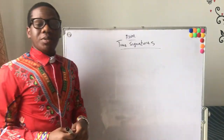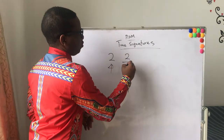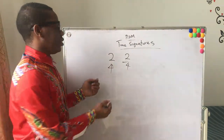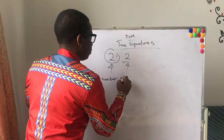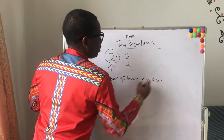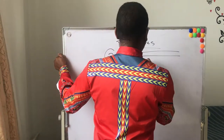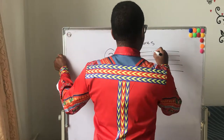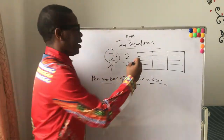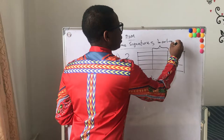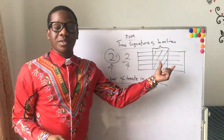The time signature looks like a fraction — something like two over four on the stave — but in the real sense it's not a fraction. It's simply saying the number of beats in a bar. The key words here are 'number of beats' and 'bar.' A bar on a piece of music is a region bounded by bar lines. Some people call it measures — it's also called a bar.